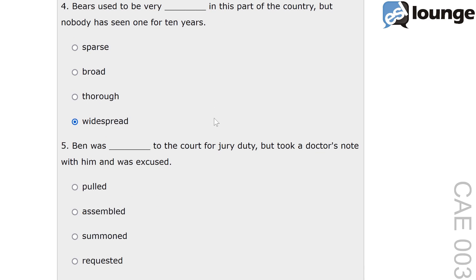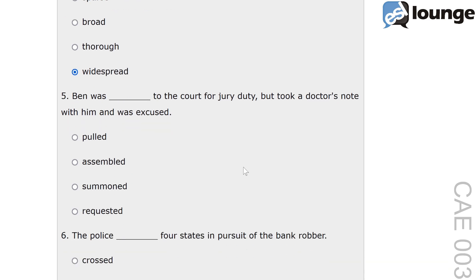Question 5. Ben was blank to the court for jury duty, but took a doctor's note with him and was excused. The options are pulled, assembled, summoned and requested. The correct answer is summoned. Summoned means to officially call someone to attend a place. For example, he was summoned to appear in court — this indicates an official request to attend. In this context, summoned refers to being called for jury duty.